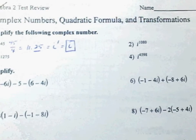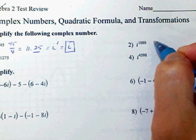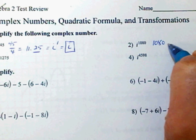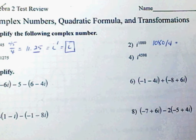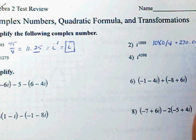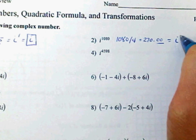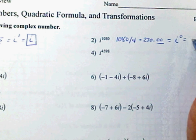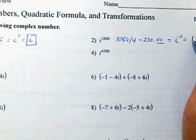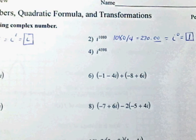Number 2, same thing. Take 1080, divide that by 4, and that should give you 270.00, which is the same thing as i to the 0. Anything to the 0 power is 1, and that is a real number.